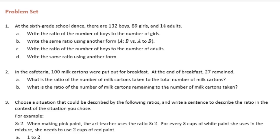Number one: at the sixth grade school dance there were 132 boys, 89 girls, and 14 adults. What is the ratio of the number of boys to the number of girls? There are multiple ways that we can represent ratios. One way is to use a colon like that in between two numbers. We can use the word 'to' in between the numbers. We can also use a fraction bar to separate the two numbers, but we're going to start by just using these first two examples.